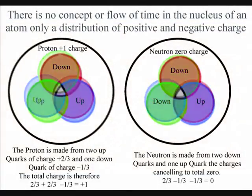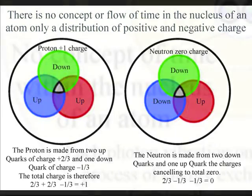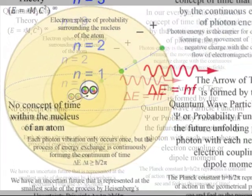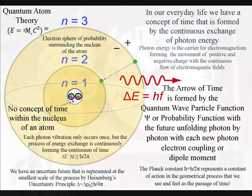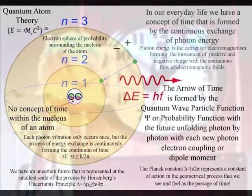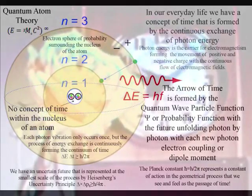is formed by a process of energy exchange that is relative to the electron probability cloud that surrounds the nucleus of the atom. We have the spontaneous absorption and emission of light, in the form of photon energy, forming the ever-changing world of our everyday life, with the movement of positive and negative charge, with the flow of electromagnetic fields.